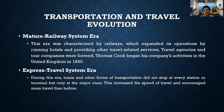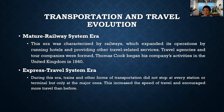Next is the mature railway system era. This era was characterized by railways which expanded operations by running hotels and providing other travel-related services. Travel agencies and tour companies were formed. Thomas Cook began his company's activities in the United Kingdom in 1840. This was the era in which they started the partnership between hotels and the railway system, like in Las Vegas, where trains had stops at hotels for travelers going to casinos.